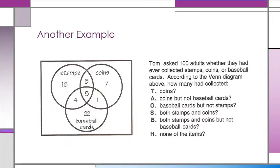Sometimes we can have three, and there's even some crazy people who even do more than three Venn diagrams. Three is all the further we're going to go. So we have Tom, and he asked 100 adults whether they had ever collected stamps, coins, or baseball cards. According to the Venn diagram, we want to know how many collected coins. When we're asking that, we mean how many total people collected coins. In this case, that would include here, here, here, and here, so that would be 18 people that collect coins.